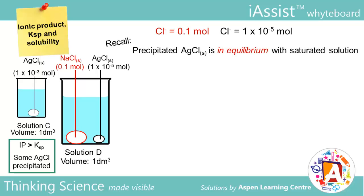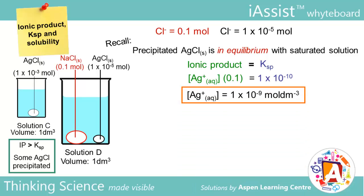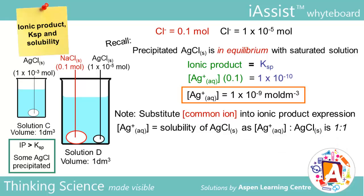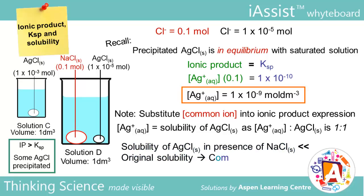Before we start, recall that when precipitation occurs, as seen in solution C, the precipitate is in equilibrium with a saturated solution — i.e. ionic product equals Ksp. Using this expression, we substitute 0.1 for the concentration of chloride. Ksp is constant at 10⁻¹⁰. Ag⁺ concentration is hence 10⁻⁹ mol dm⁻³. Note that we always substitute the common ion into the ionic product expression, because solubility of AgCl has changed and we can no longer be sure of the Ag⁺ concentration. We equate Ag⁺ concentration to the solubility of AgCl as they are in a 1:1 stoichiometric ratio. We cannot use Cl⁻ concentration as it is contributed by both AgCl and NaCl. Lastly, note that the new solubility of AgCl in the presence of NaCl is 10,000 times lower than that of AgCl alone, therefore confirming the law of common ion.